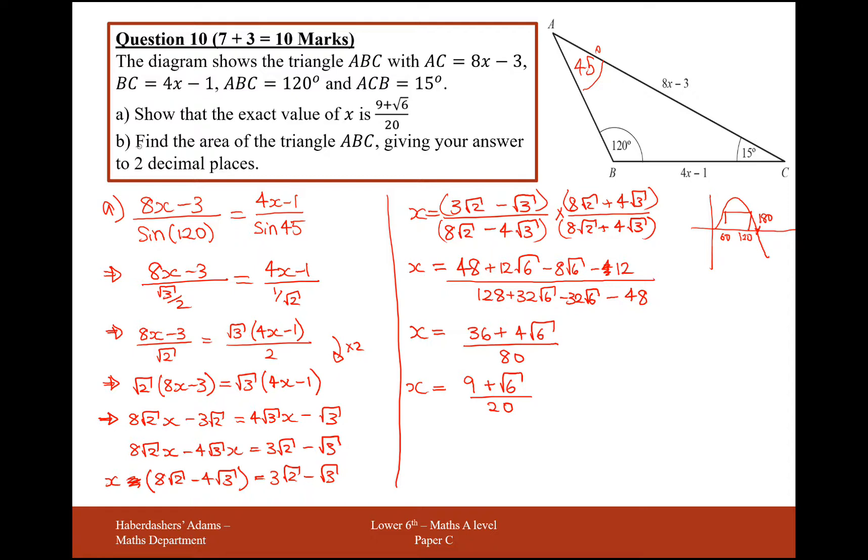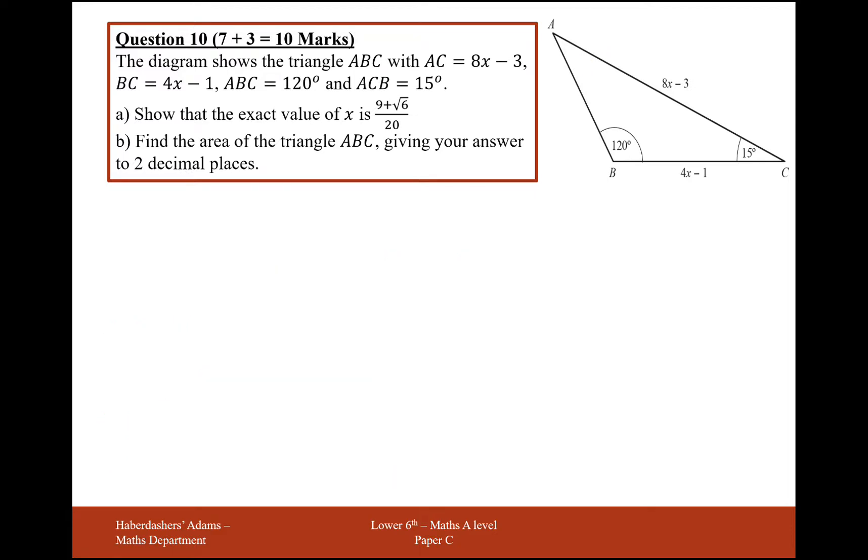The next part is find the area of triangle ABC, giving your answer to two decimal places. So I think I've got AB and sine C here. So I'm going to use area equals half AB sine C. And what we have to do here is it's just going to be to two decimal places, so I'm going to do most of the work for this on my calculator.